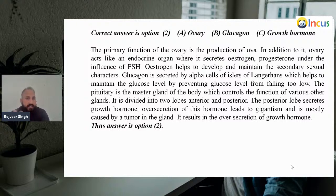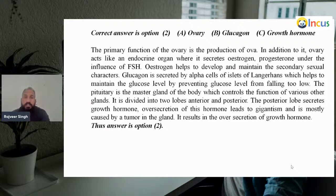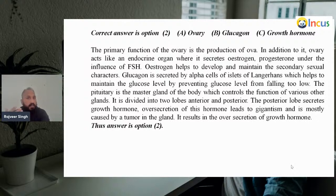The primary function of the ovary is production of eggs. In addition, the ovary acts as an endocrine organ, secreting estrogen and progesterone under the influence of FSH — follicle-stimulating hormone. Estrogen helps develop and maintain secondary sexual characters. Glucagon is secreted by alpha cells of the islets of Langerhans, maintaining glucose level by preventing it from falling too low. The pituitary is the master gland; its anterior lobe secretes growth hormone. Over-secretion leads to gigantism, mostly caused by tumor in the gland. Answer will be second.